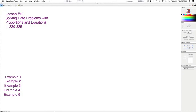Okay, how are we doing? This is lesson 49. This is solving rate problems with proportions and equations. I'm on page 330. This goes to 335.